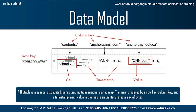Another useful column family for this table is 'anchor'. Each column key in this family represents a single anchor, as shown in the figure. The qualifier is the name of the referring site and the cell contents is the link text. Access control and both disk and memory accounting are performed at the column family level. In our web table example, these controls allow us to manage several different types of applications: some that add new base data, some that read the base data and create derived column families, and some that are only allowed to view existing data — possibly not even all existing families for privacy reasons.